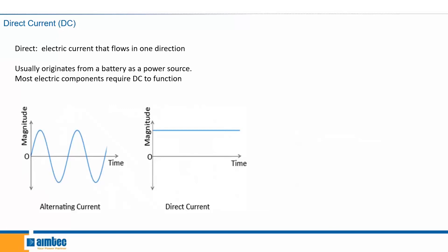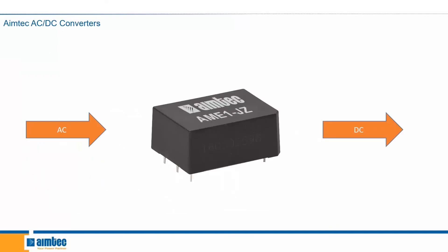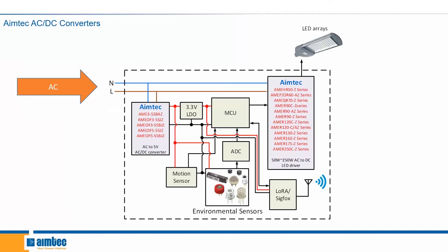Most components require DC current to function. This is where AIMTECH comes in — we have AC to DC converters. AC comes in when you plug your power into the wall outlet, it goes through AIMTECH's AC-DC converter, and what you get on the output is direct current. We can then use this direct current to either power components directly, or we may need to transform it to higher or lower voltages depending on the components being powered. This diagram shows an example of taking AC current and converting it to different voltages depending on the different chips or components in the circuit.